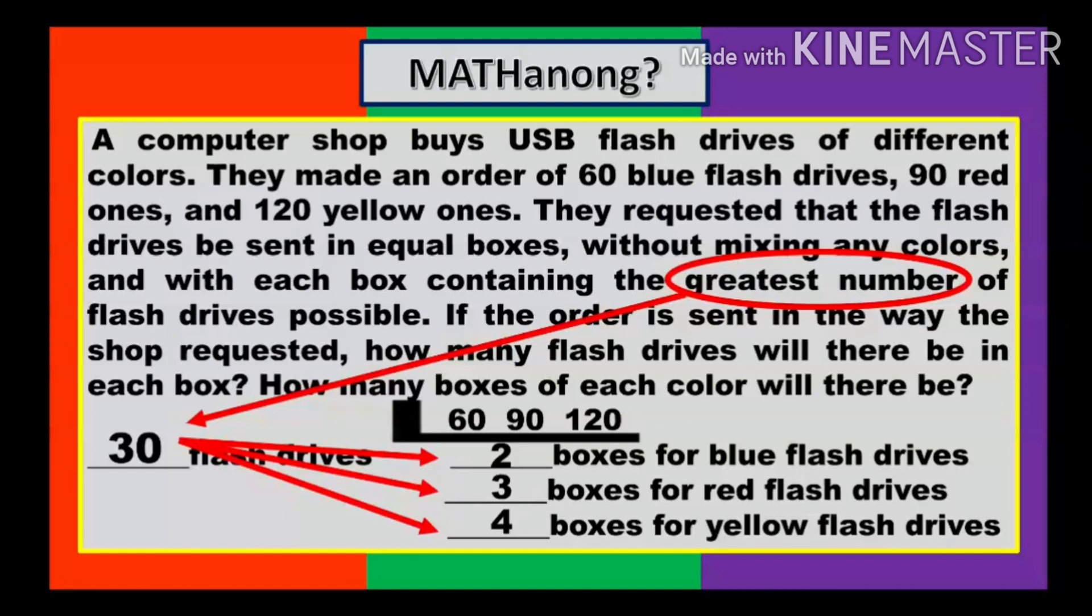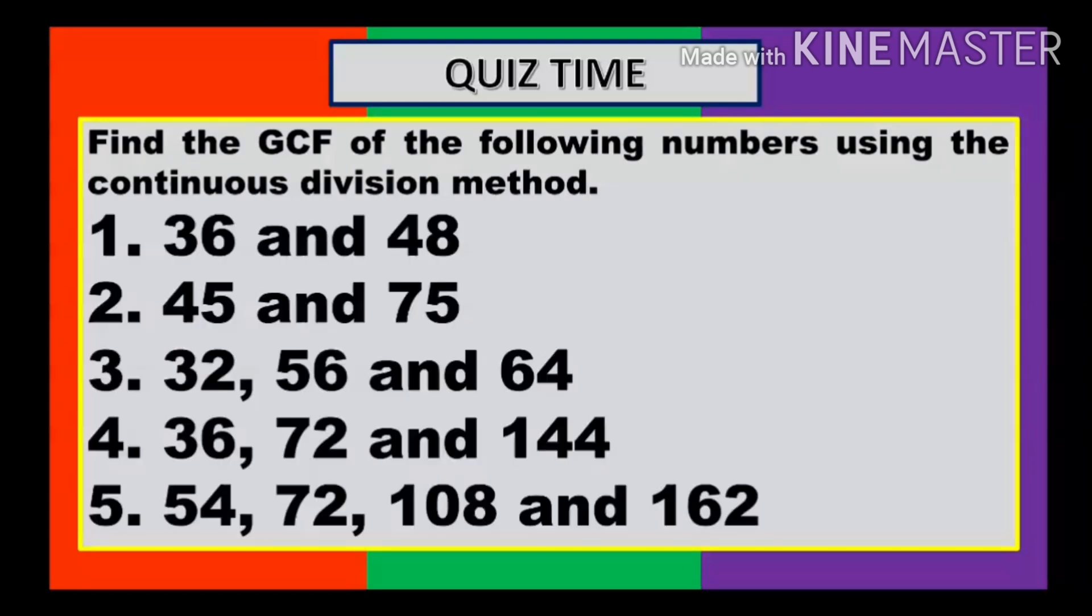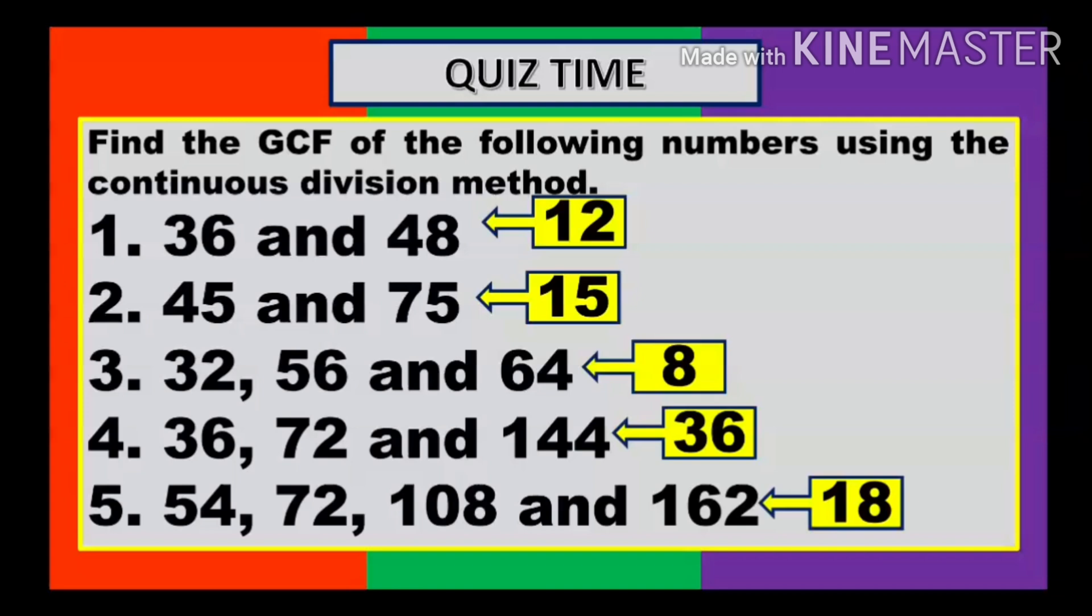If you don't understand, kindly replay it again. Okay, let's proceed. I think you are ready now for our next activity: Quiz time! You have your own time to finish it. Numbers 1 to 5. Find the GCF using the Continuous Division Method. Practice using this method. You have your time. Pause it now. I think you are done. Let's check and reveal the answers. Number 1: the answer is 12. Number 2: 15. Number 3: 8. Number 4: 36. And number 5 is 18. So many people got the right answers and got perfect scores. Congratulations!